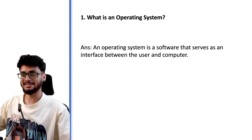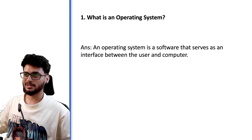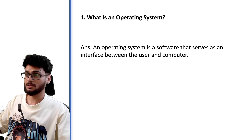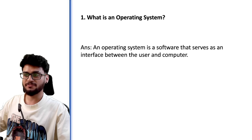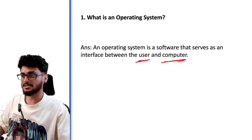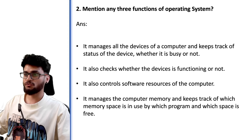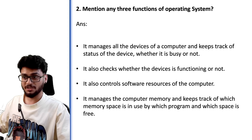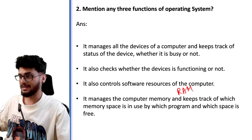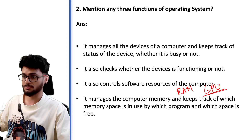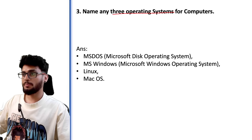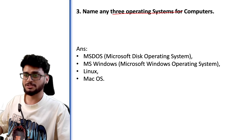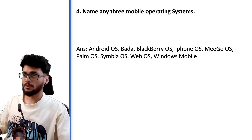With that, we have completed the entire portion of ICT skills. Let's quickly look at exam questions. What is an operating system? It is a software that serves as an interface between the user and the computer. Three functions of an operating system: it keeps track of your hardware, checks whether devices are functioning or not, and monitors RAM and GPU usage. Three operating systems for computers: Microsoft Windows, Ubuntu, and Linux/Mac OS.